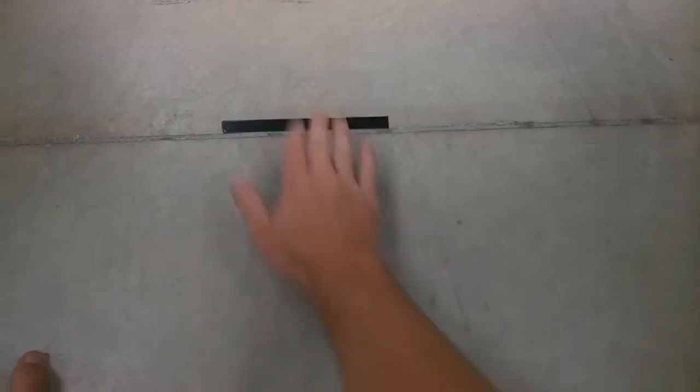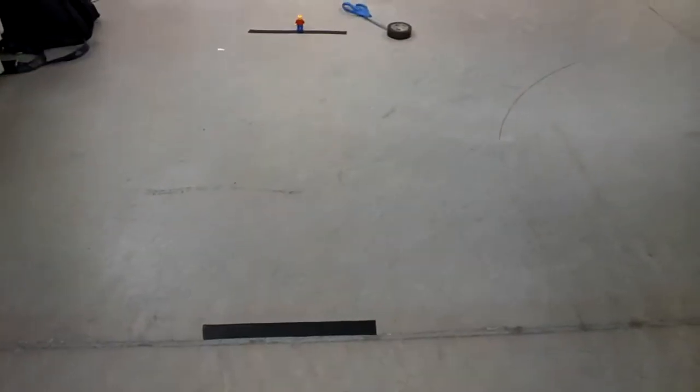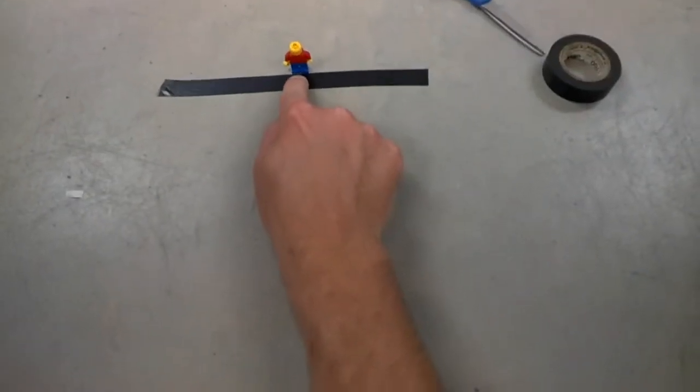So what you see is I have a starting point, a piece of black tape, it could be any tape you want, and I have another endpoint down here. And right at the edge of the tape, I have a minifig.